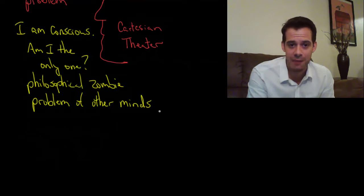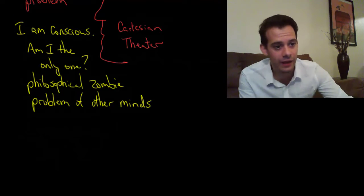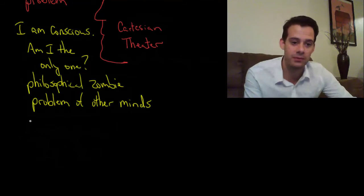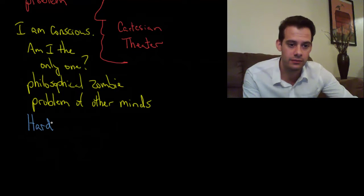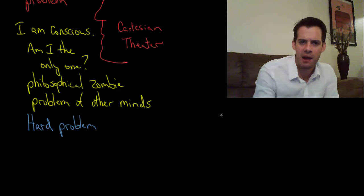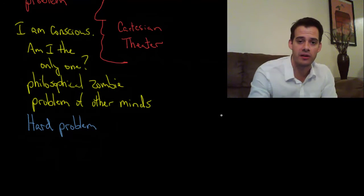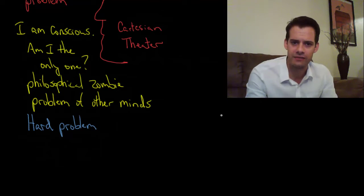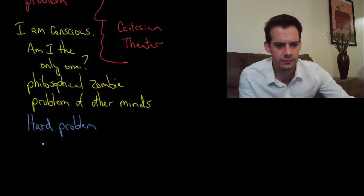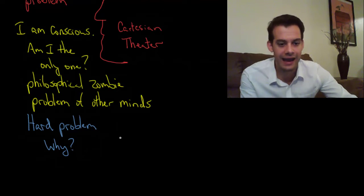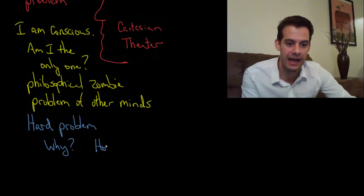Now, if these previous problems weren't hard enough we'll end with the hard problem of consciousness. And it's a very hard problem indeed. So the hard problem of consciousness really has two parts. It says, why do we have consciousness? And how does it happen? How did we get it?